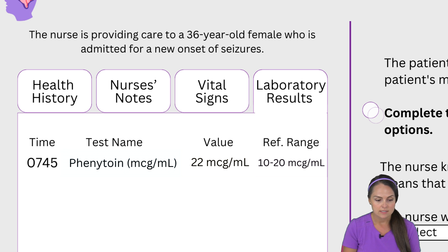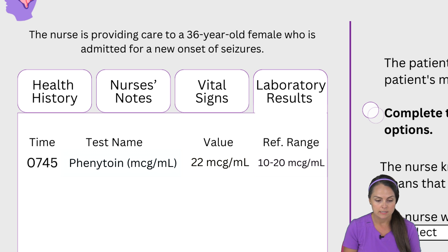At 7:45 in the morning the patient had a test for phenytoin, measured in micrograms per milliliter. The patient's value was 22 micrograms per milliliter, and right beside it is the reference range for this medication, because we have to check levels for certain medications. The normal level is between 10 to 20 micrograms per milliliter.